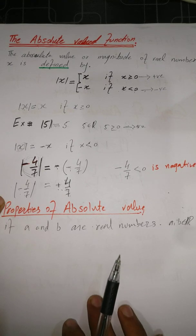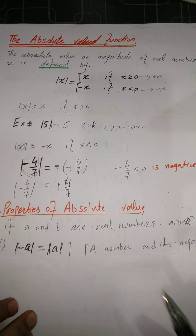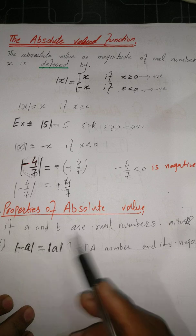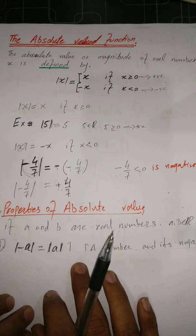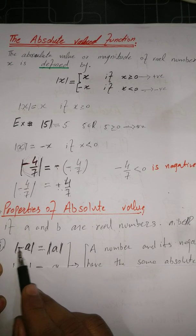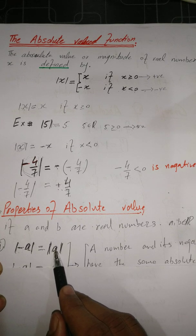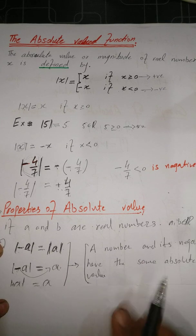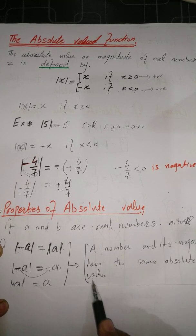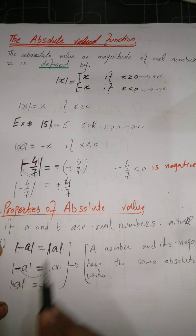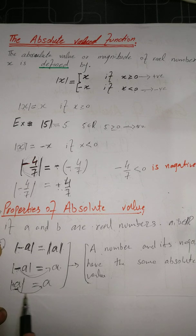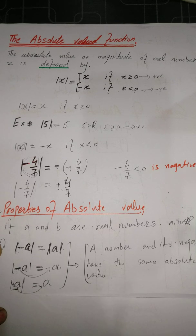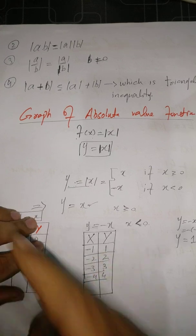Next we discuss some properties of absolute values. The first property: if a and b are real numbers, then |-a| = |a|. A number and its negative have the same absolute value. By definition, if the value is negative then mod makes it positive, and if positive then mod of the number is itself.